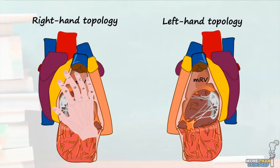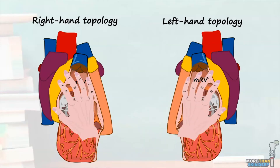In these cases, instead of the right hand being used, one's left hand is placed on the surface of the right ventricle such that the palmar surface is applied to the septum, the thumb in the inlet and fingers in the outlet.